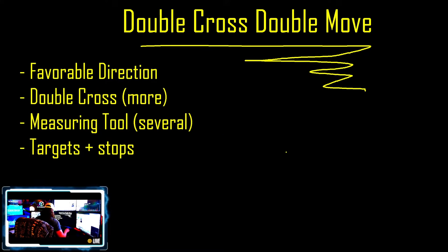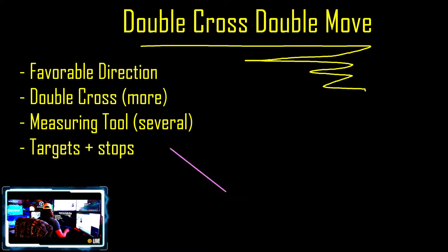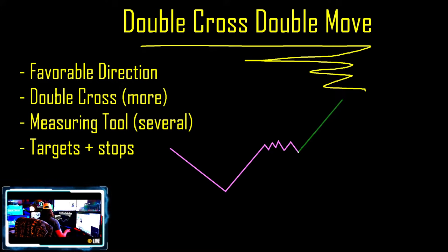Let's draw an example of one of these first. Price is going to be coming down to an area — we need a pivot — and then we're going to come up at a location, maybe make a couple of moves. Then we are looking for some pretty big movement after that.